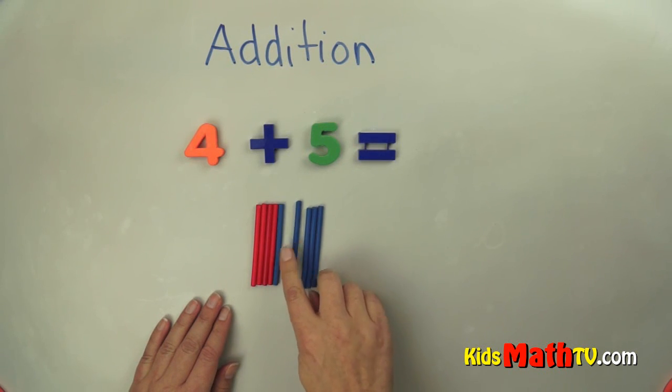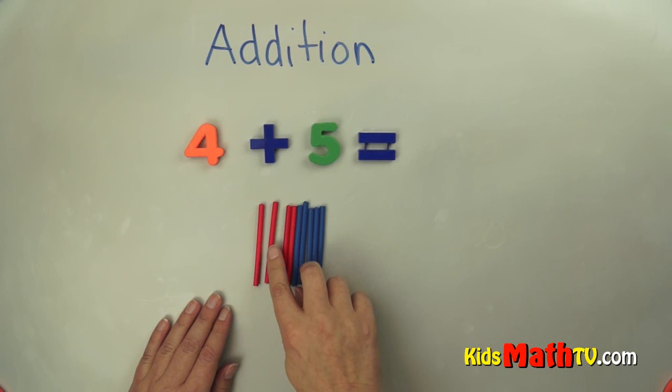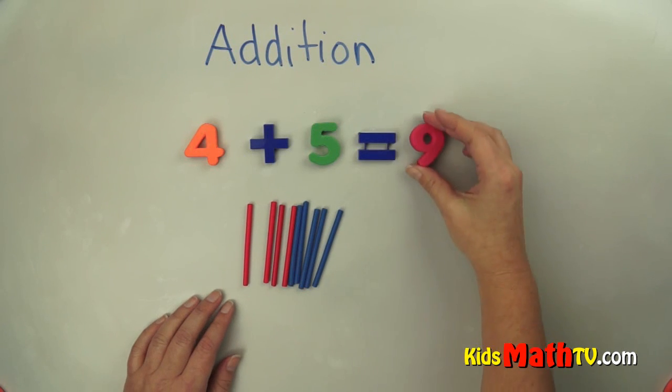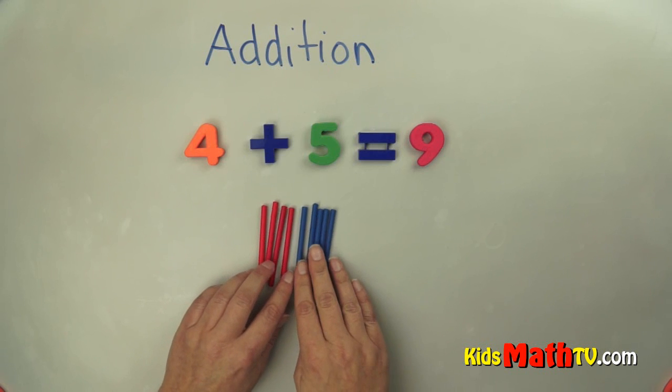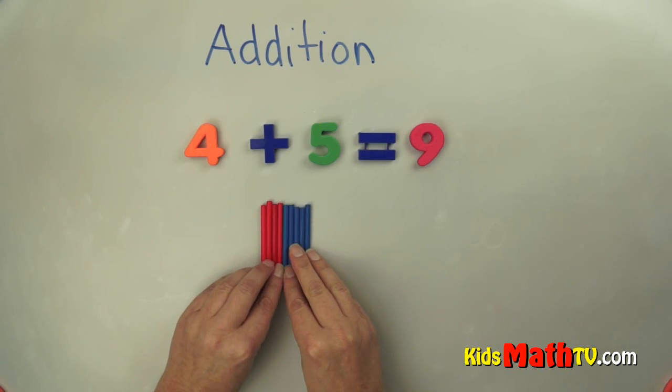One, two, three, four, five, six, seven, eight, nine. There are nine sticks all together. So four plus five all together is nine.